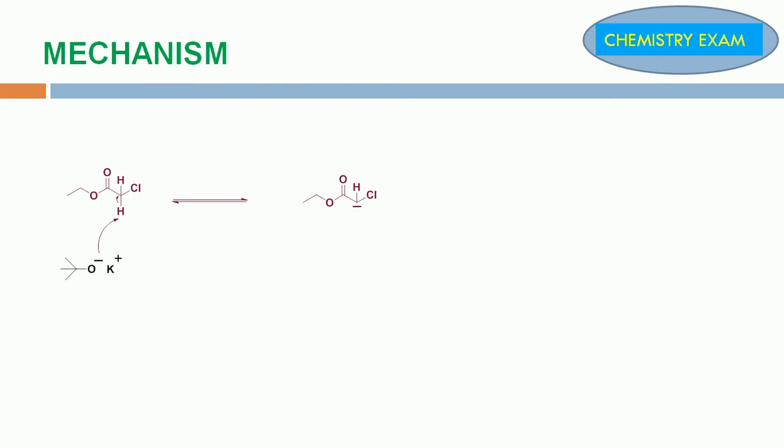In that carbanion, electrons delocalize from the adjacent carbonyl group to form an oxyanion. These are the two resonance forms for this carbanion.